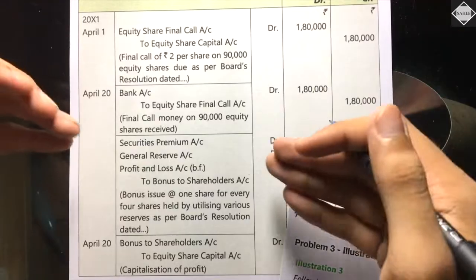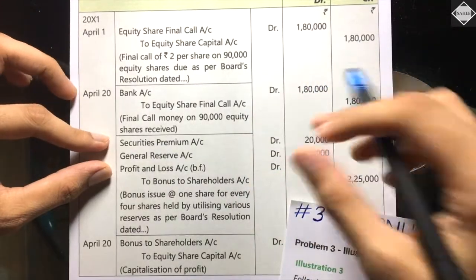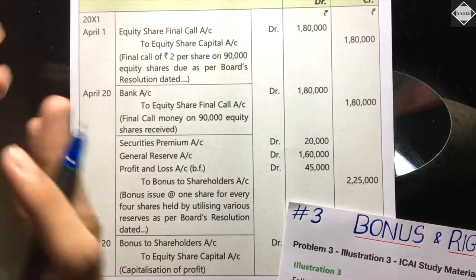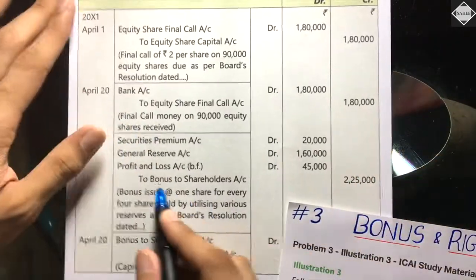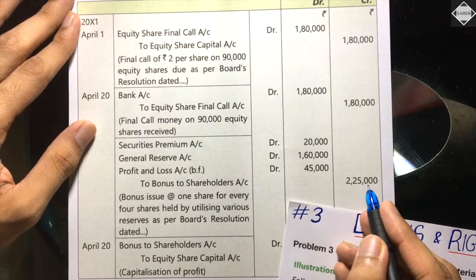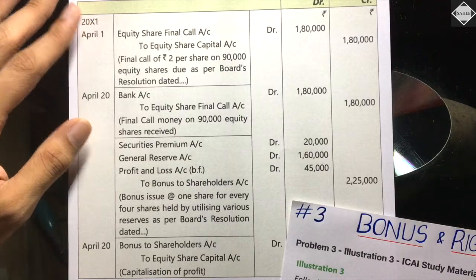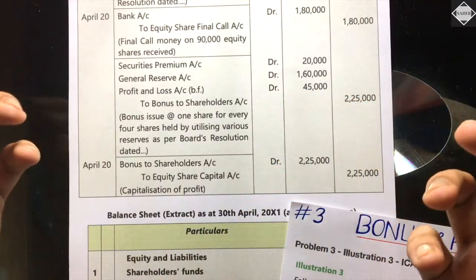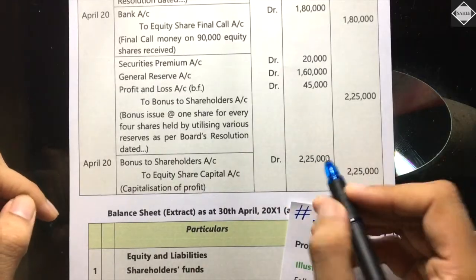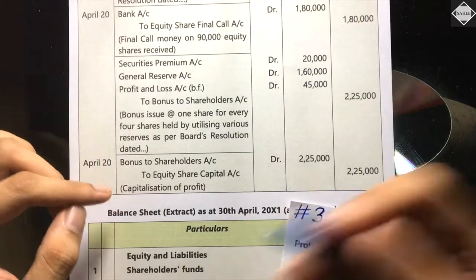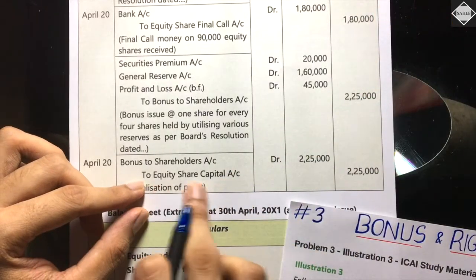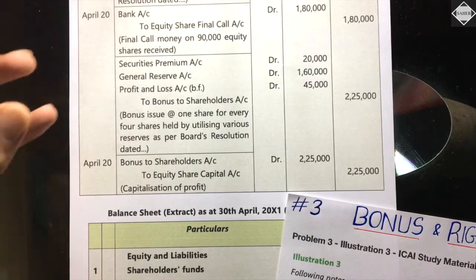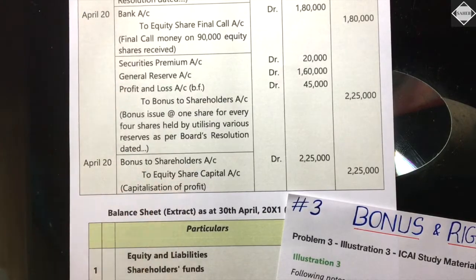By debiting the reserves we decrease them, and we transfer the total value to the temporary dummy account 'Bonus to Shareholders' (credit ₹2,25,000). Reserves have credit balances — debiting them utilizes and decreases them. Then when shares are actually issued, we cancel the Bonus to Shareholders account: debit Bonus to Shareholders Account ₹2,25,000, and credit Equity Share Capital Account ₹2,25,000. This is capitalization of profits — reserves are converted into capital.